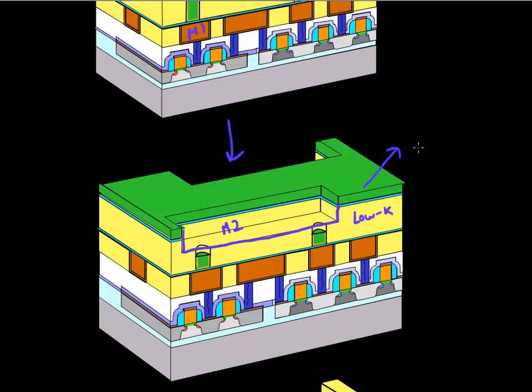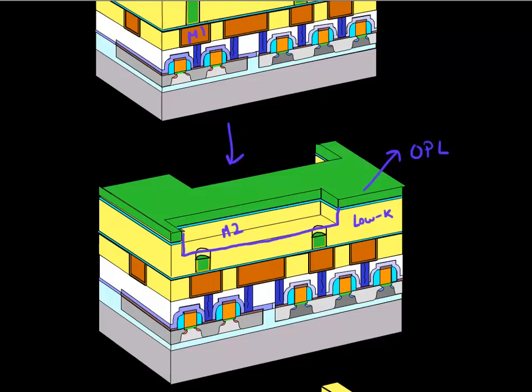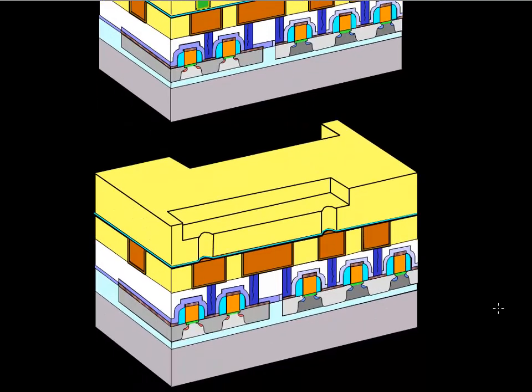And we have now etched this pattern of these M2 lines into our dielectric. And we can then easily strip off this organic planarization layer. And now what we see is now we have formed the mold. So we have now formed the mold. So we have formed this mold which has our vias and it also has the next metal lines. So once we have formed this mold,